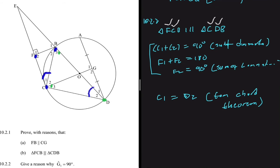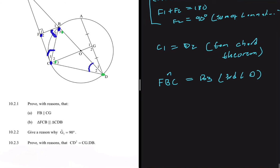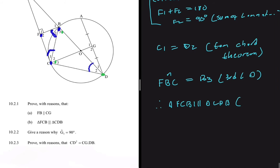We've proved two pairs of angles are equal, so we just need the third one. Angle FBC in triangle FCB equals angle B3 in triangle CBD — the third angle of a triangle must also be equal because the sum of angles in a triangle is always the same. So we have proved that triangle FCB is similar to triangle CDB by angle-angle-angle, since all three pairs of angles are equal to each other.